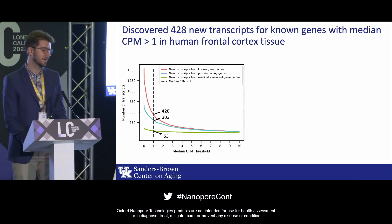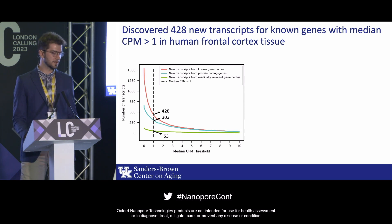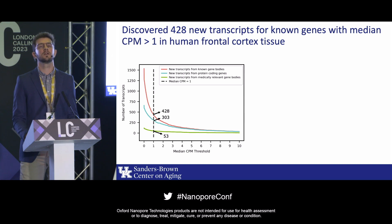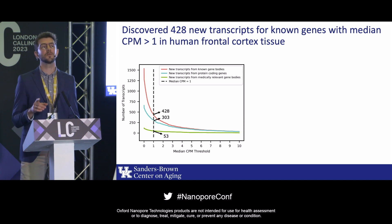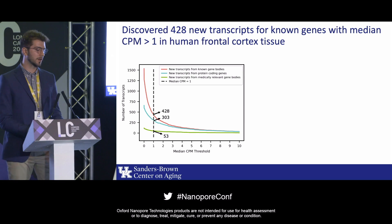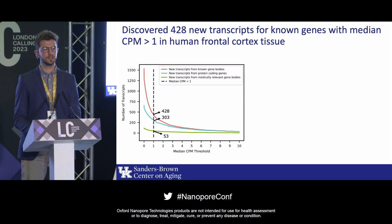This graph shows the number of transcripts we discovered for known genes. On the y-axis we have number of transcripts, and on the x-axis a median CPM threshold. CPM stands for counts per million — a CPM of one means one out of every million reads came from that transcript. We found 428 new transcripts for known genes: 303 came from protein-coding genes and 53 came from medically relevant genes.